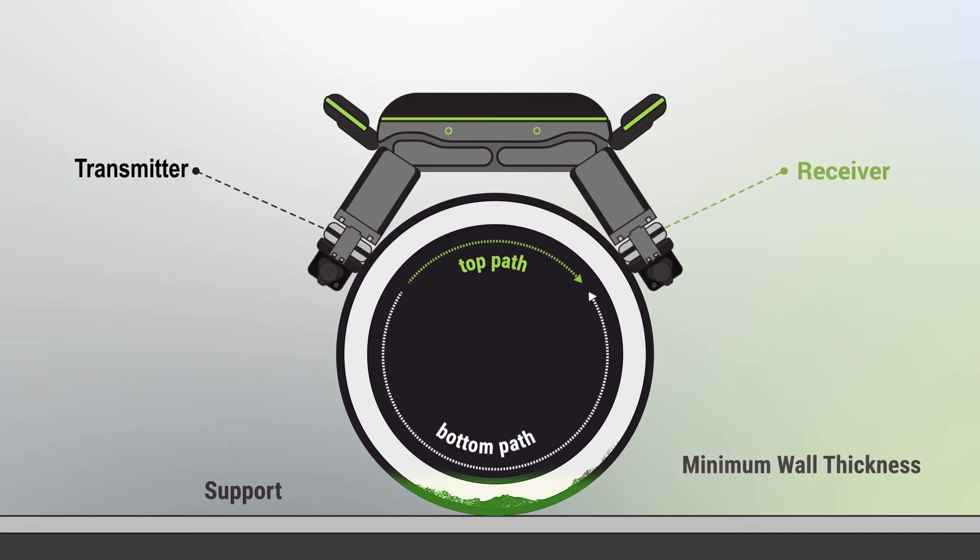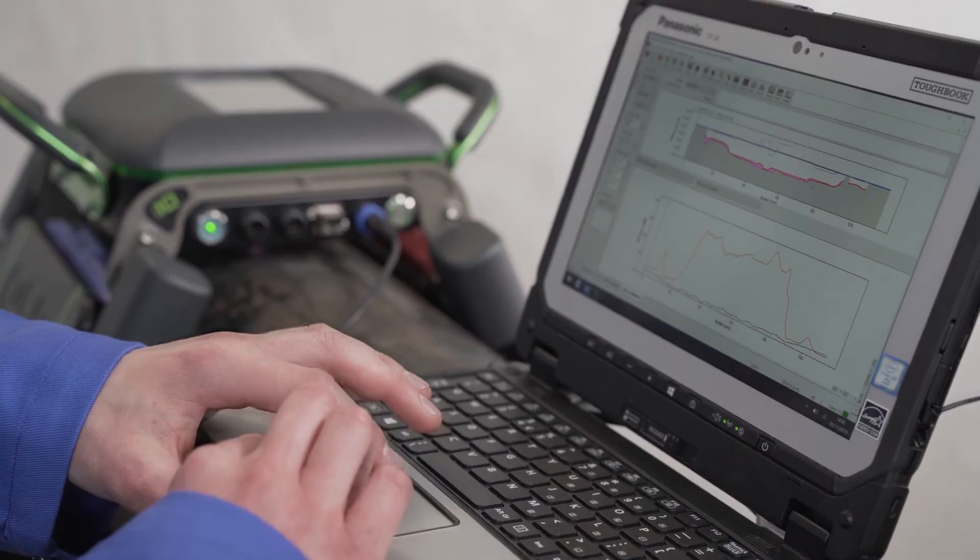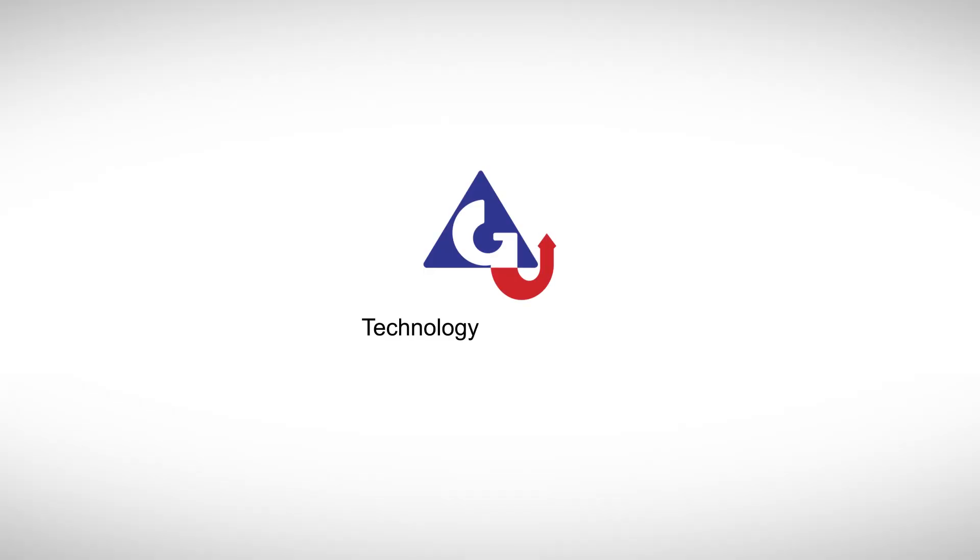In conclusion, the QSR1 can accurately size real corrosion by using GUL scanning's frequency-based method. GUL. Technology you can trust.